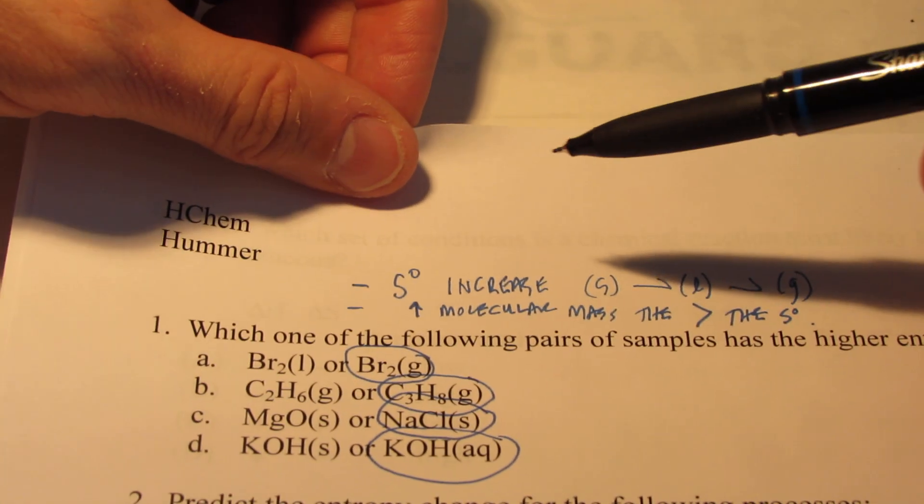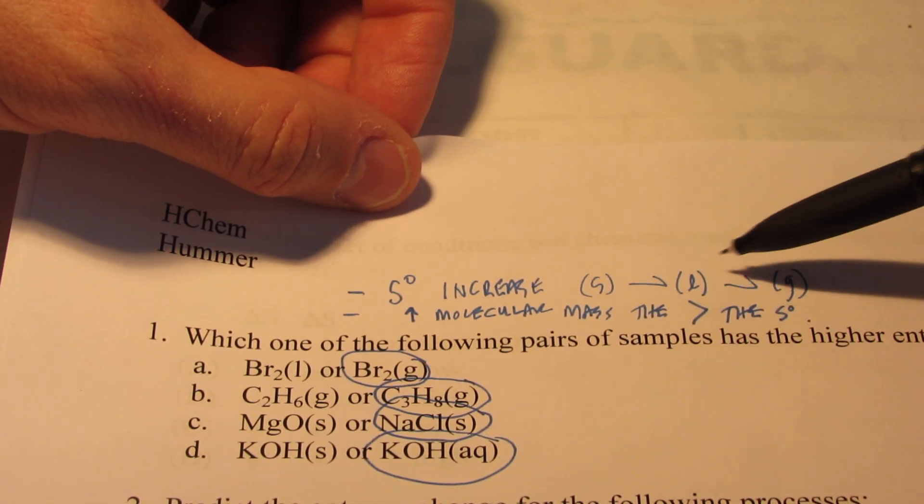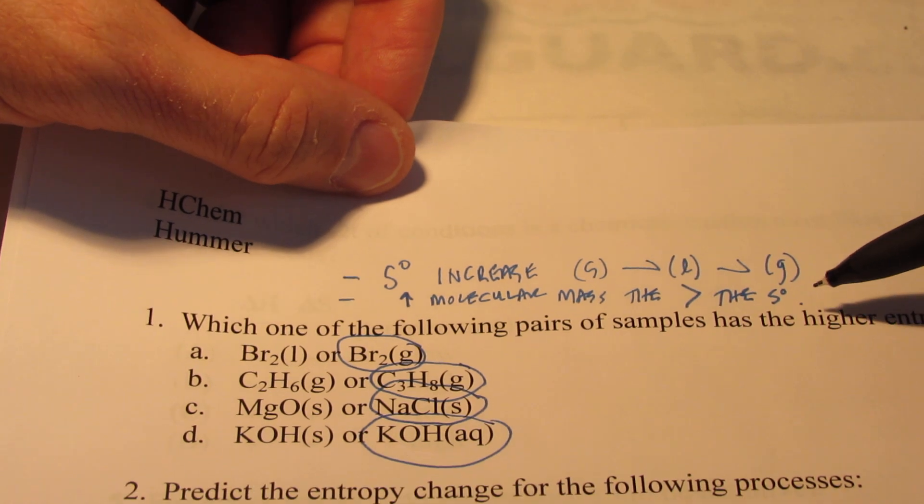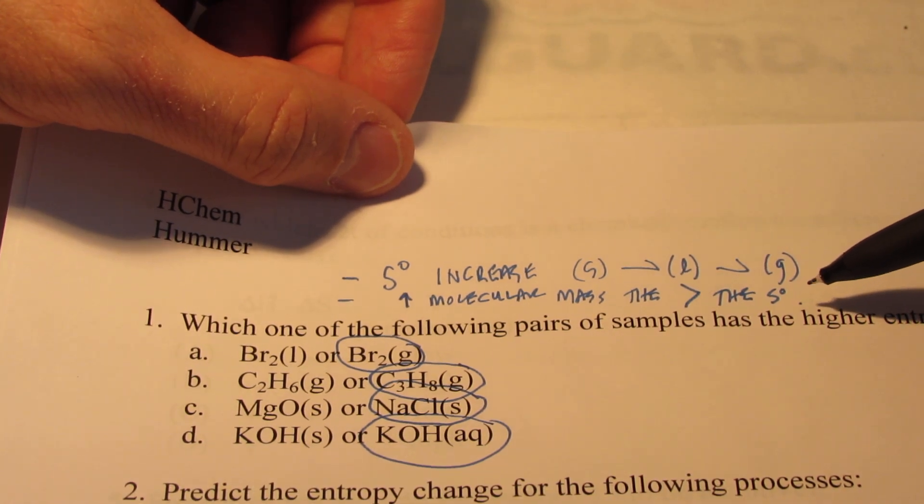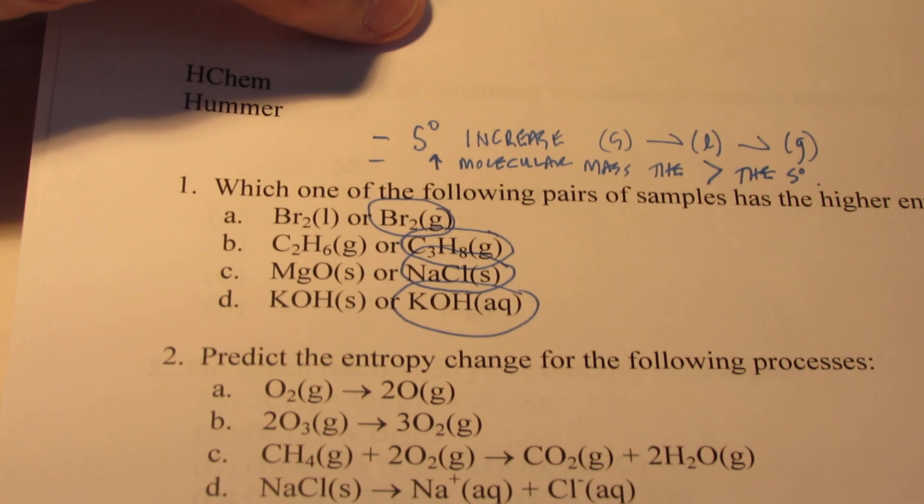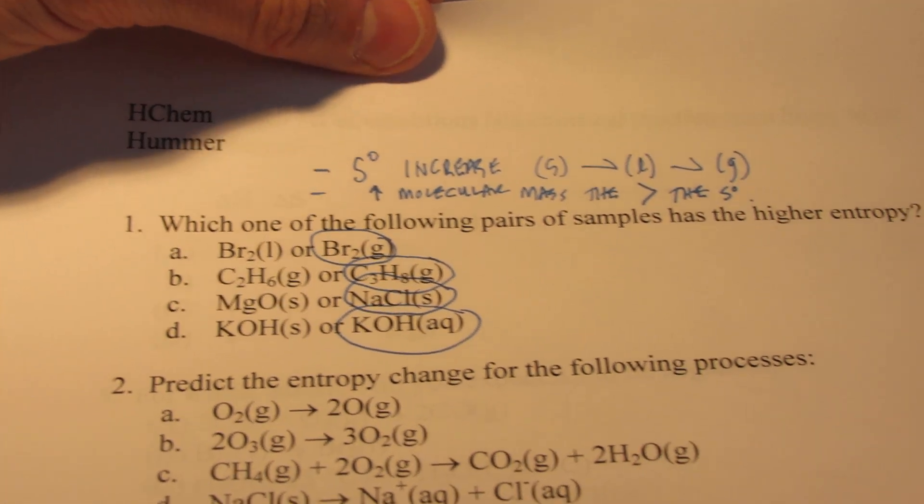So remember, entropy will increase when you change phases from solid to liquid to gas. Gases have the highest degree of entropy. Also, those molecules with a greater molecular weight have a higher degree of entropy than those with a smaller molecular weight. Okay, let's try another example.